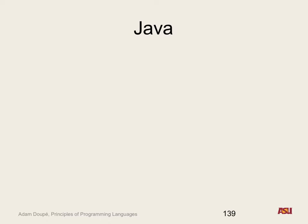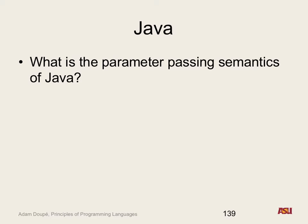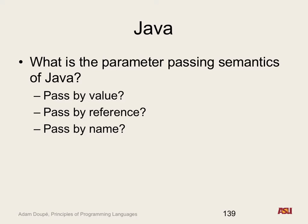How many people know Java? Feel like you know it pretty well? Only a third of you raised your hands — I feel like that's a very low percentage. Don't you learn Java in your intro classes? So you've forgotten it since then, or haven't used it since then? Now that you've learned parameter passing semantics, what is the parameter passing semantics of Java? Pass by reference? Pass by copy of the reference variable? What are reference variables in Java? It's complicated — like a Facebook relationship status. Is it pass by value, pass by reference, or pass by name?